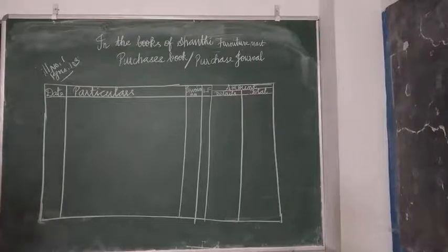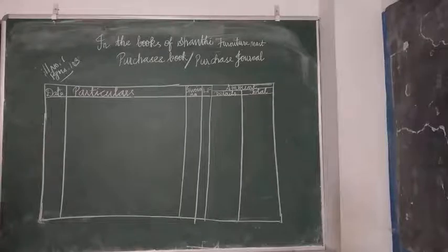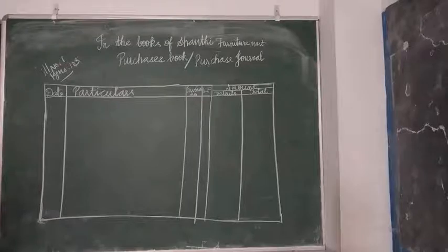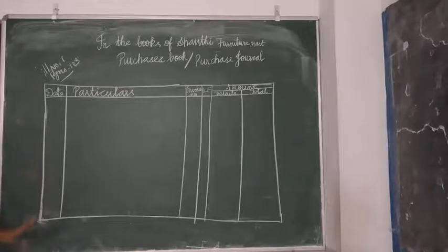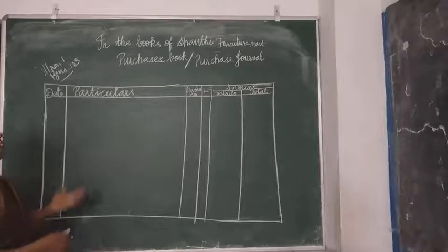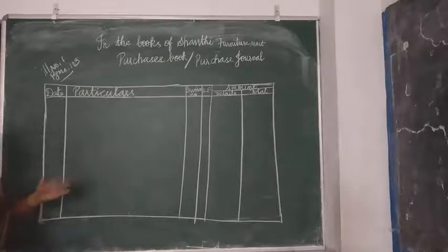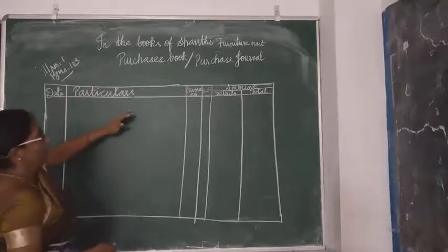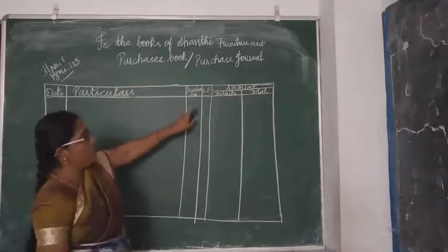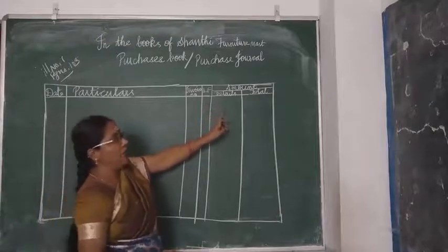I will explain the sum first. Illustration 1: Record the following transactions in the purchases book of Shanti Furniture Mart. You know the format — you are going to write the format first before starting the purchases book. The format columns are: Date, Particulars, Invoice Number, LF, Details, and Total.